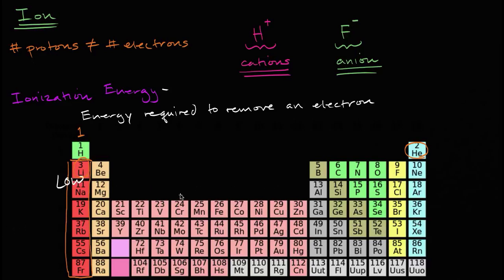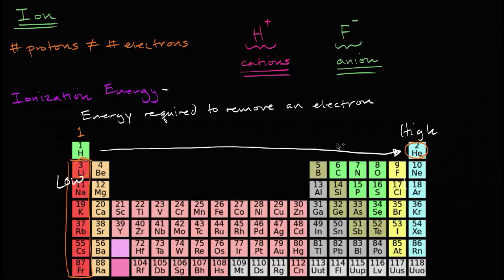Now what happens as we move to the right of the periodic table? If we go all the way to the right — to the noble gases — the noble gases are very, very stable. They don't want their electron configurations messed with. Neon on down has their eight electrons, that octet rule. Helium has two, which is full for the first shell. So it's very hard to remove an electron from here, and so it has a very high ionization energy. Low energy on the left means easy to remove electrons, and on the right you have high ionization energy. That's the general trend: as you go from left to right, you go from low ionization energy to high ionization energy.